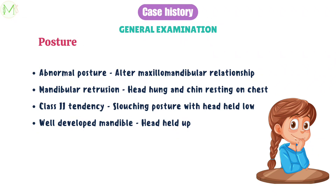Stooped-shouldered children with head hung or chin resting on the chest have been known to create their own mandibular retrusion. Generally, a patient with head held up high is associated with a well-developed mandible, whereas a slouching posture with head held down is associated with a Class 2 tendency or a deficient mandible.